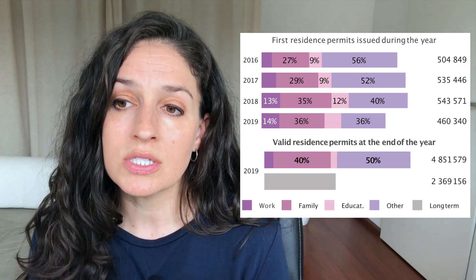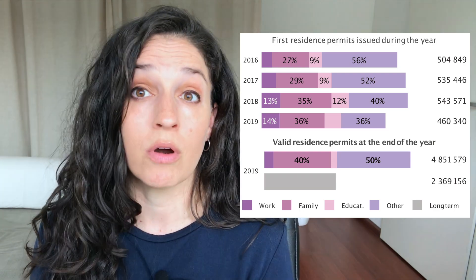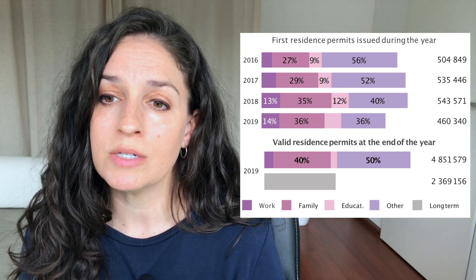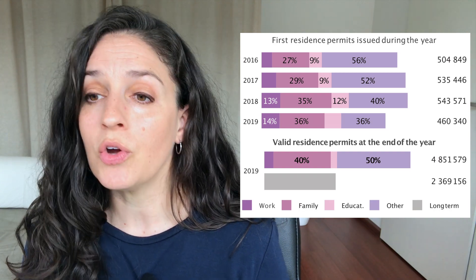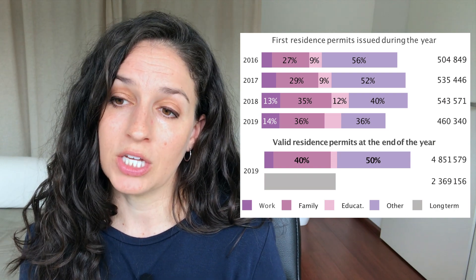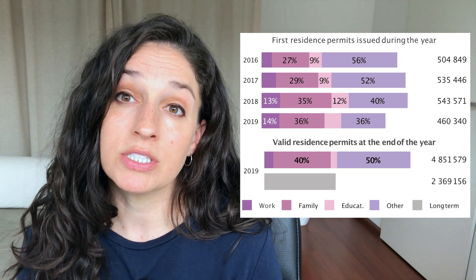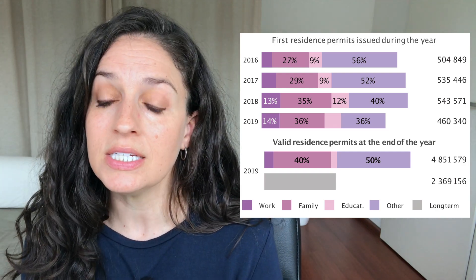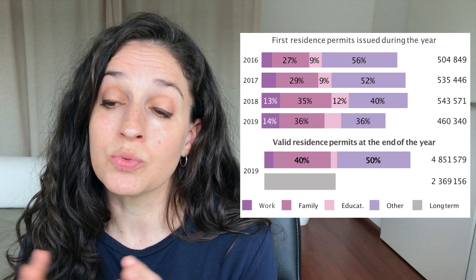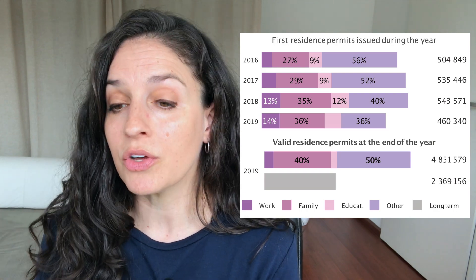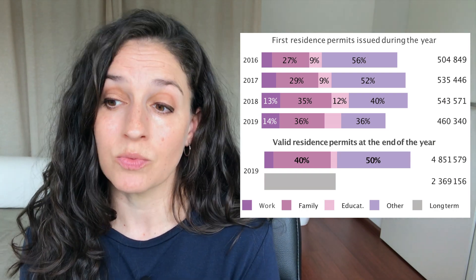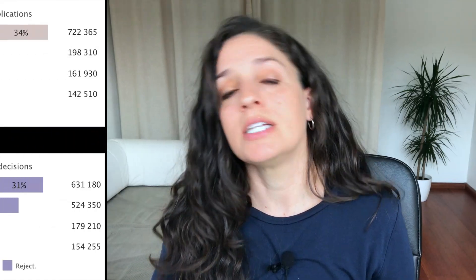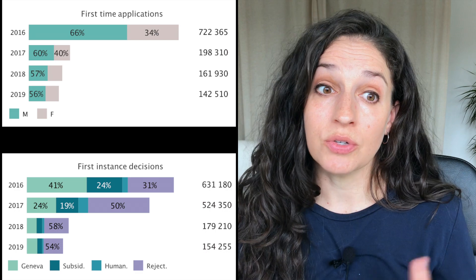The next largest number of residence permits was for family reasons — family reunification and family formation — with some for work and some for education. If we look at valid residence permits in general at the end of 2019, this is really mixed between 'other reasons' and family reasons, with quite a few being long-term residence permits.